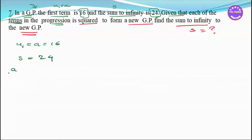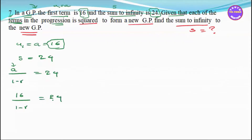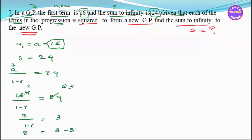The formula for sum to infinity is A divided by (1 minus R) equal to 24. So A equals 16, giving us 16 divided by (1 minus R) equals 24. Rearranging: 2 divided by (1 minus R) equals 3, so 2 equals 3 minus 3R, giving minus 3R equals minus 1. Therefore R equals 1 by 3.